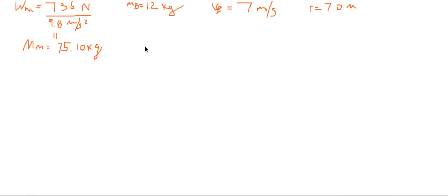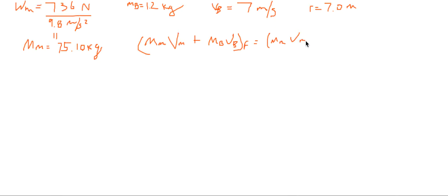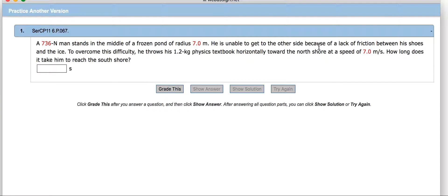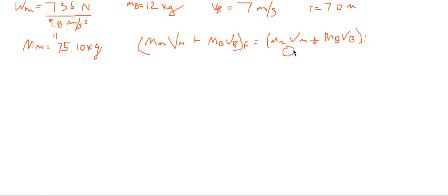We can combine those equations to make a new one: the mass of the man times the velocity of the man, plus the mass of the book times the velocity of the book, is equal to the mass of the man times the initial velocity of the man plus the mass of the book times the initial velocity of the book. Since he's standing still and then throws the book, the initial velocities of both the man and the book are zero, so this side equals zero.